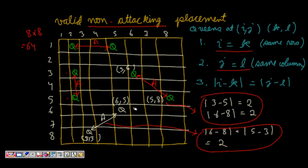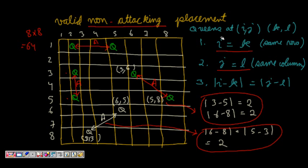The diagonal attack is a bit trickier. There are two diagonal orientations. If we have two queens, the absolute value of (i minus k) equals the absolute value of (j minus l) — meaning the absolute difference between the x-coordinates and y-coordinates are equal — then they are on the same diagonal and can attack each other. These are the three ways queens can attack each other.